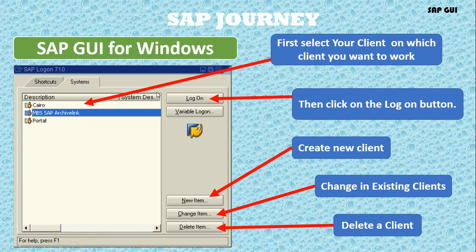You can see there are three types of clients. If you want to work on the first client, select it and press the logon button. The 'New Item' button is used for creating a new client, the 'Change Item' button is for changing client details, and through 'Delete Item' you can delete a client. Select a client and press the logon button.